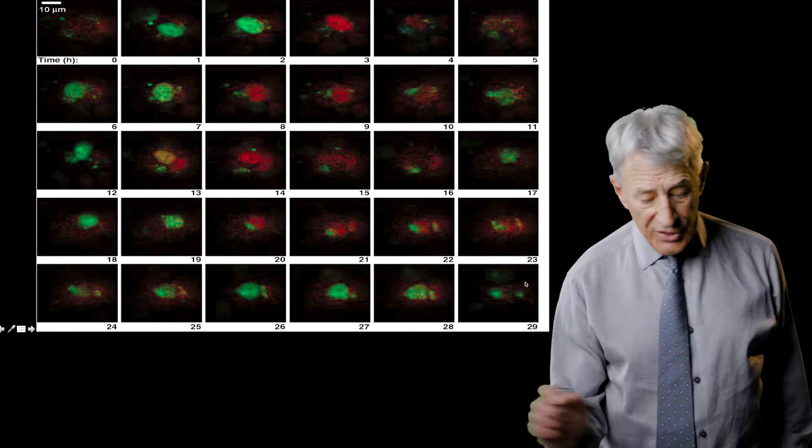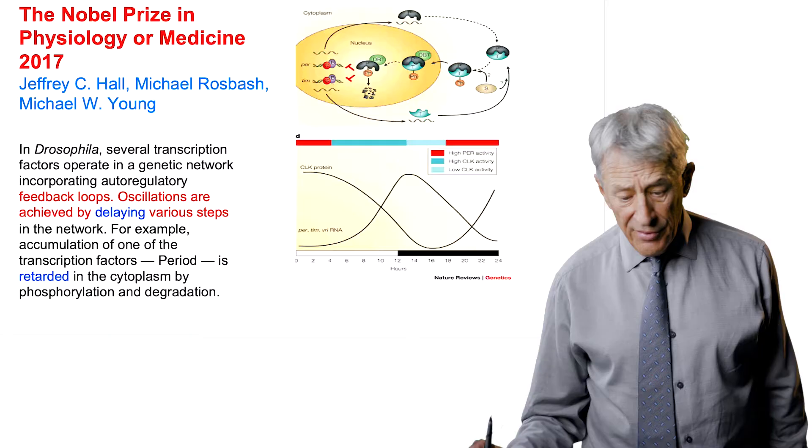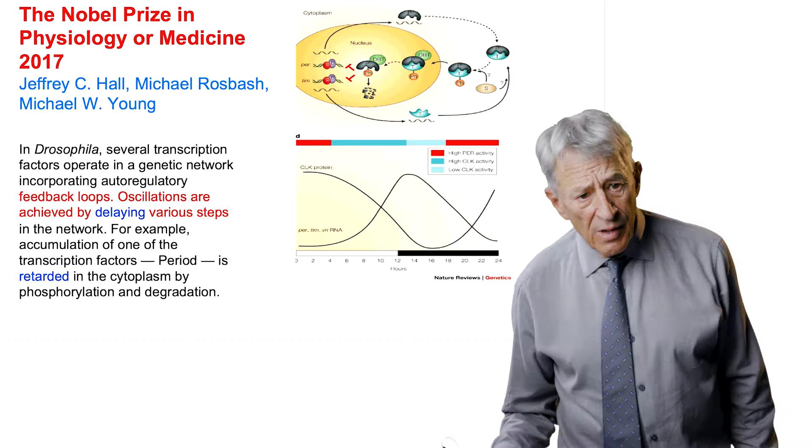And what they found was, when they looked at it over time, a two to three hour period, green, red, green, red, was clearly seen as a pattern of gene expression.